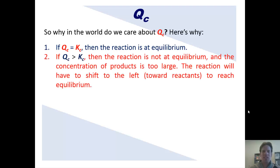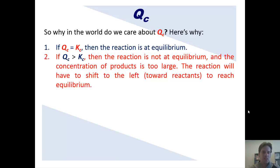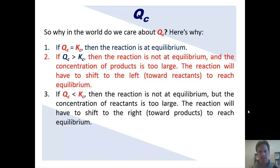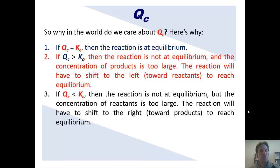But what if QC is greater than KC? Well, if that's the case, then your reaction is obviously not at equilibrium, and the concentration of the products is too large. Now if the concentration of the products is too large — there in the numerator — then the reaction has to shift to the left toward reactants before it can reach equilibrium. But what if QC is smaller than KC? Well, if that's the case, then the reaction is also not at equilibrium. In that case, the concentration of the reactants in the denominator is too big.